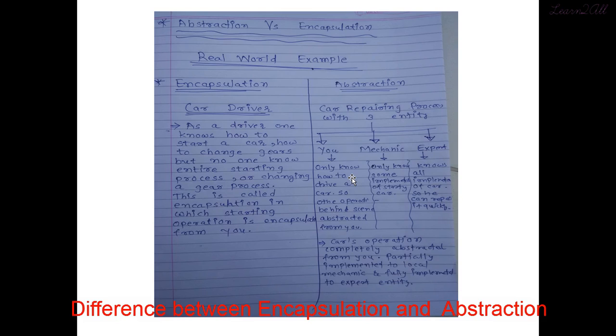Now we will take an example of abstraction. For better understanding, we will divide the car operation into three parts. Suppose you are a user. You know only how to start a car but don't know how all the inner operations are performed. So the car's operations are completely abstracted from you.